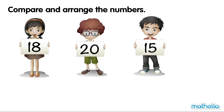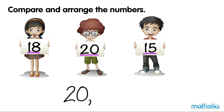18 is greater than 15. Let's arrange the numbers from the greatest to the smallest. 20 is greater than 18 and also greater than 15, so 20 is the greatest number. Let's compare the other two numbers. 18 is greater than 15.